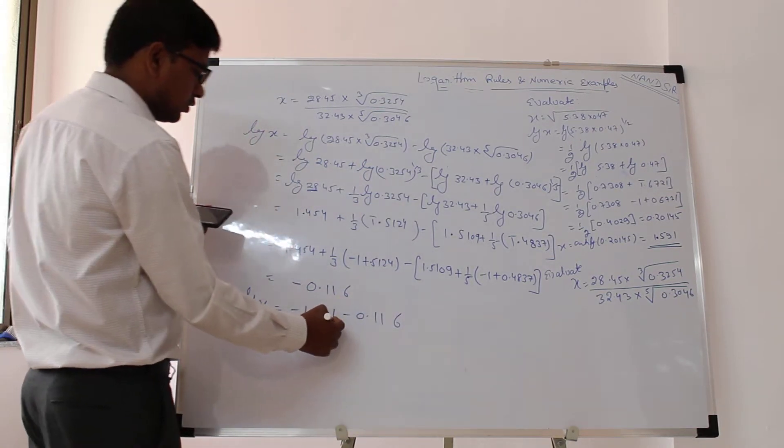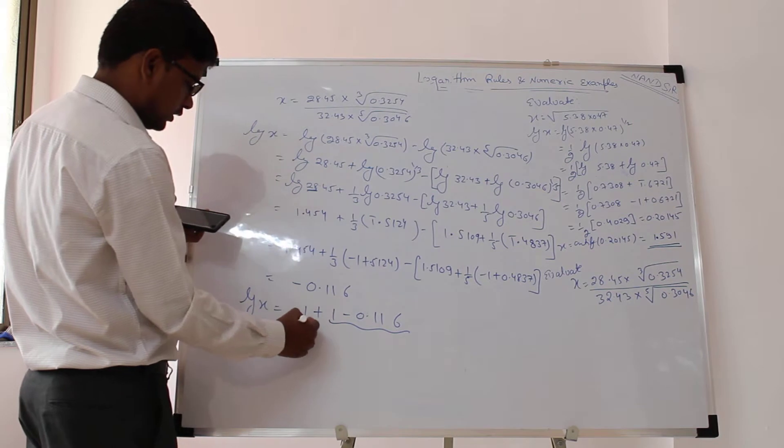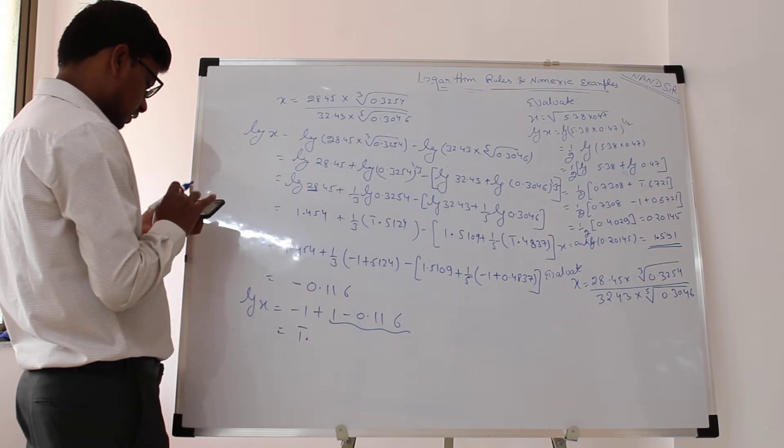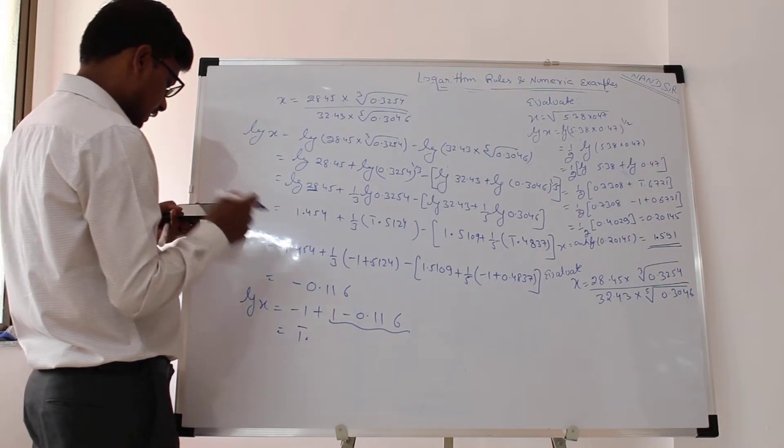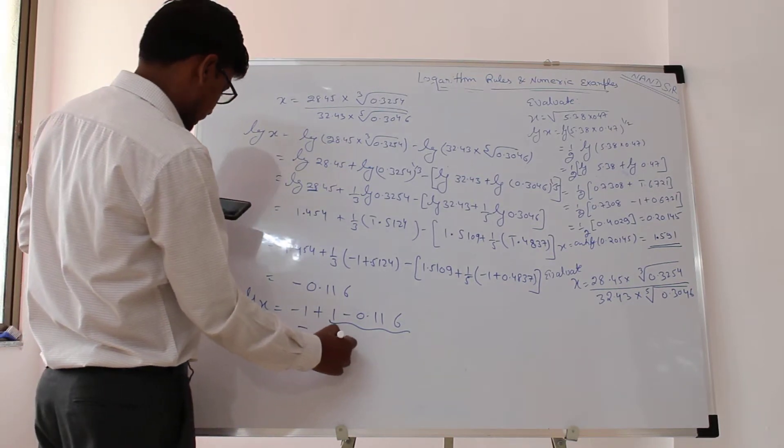So now this number is positive and this can be written as 1 bar. So this number will be 0.884.